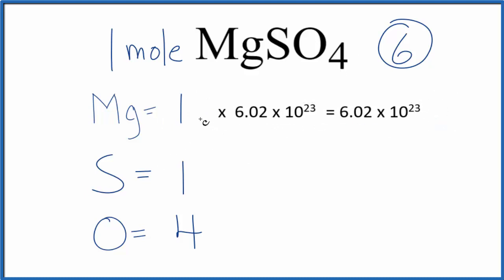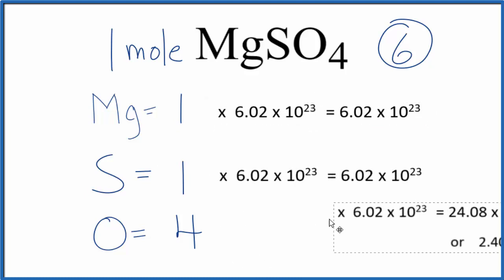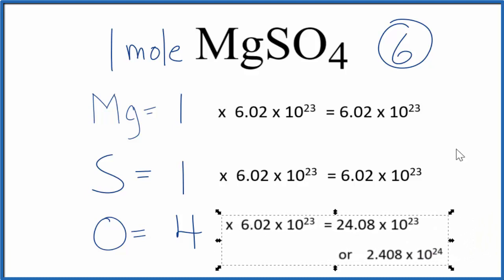Same for sulfur here. It's one again, so it would just be the same thing. Then since we have four oxygen atoms, we just multiply four times Avogadro's number, and that'll give us the number of oxygen atoms in one mole of MgSO4.